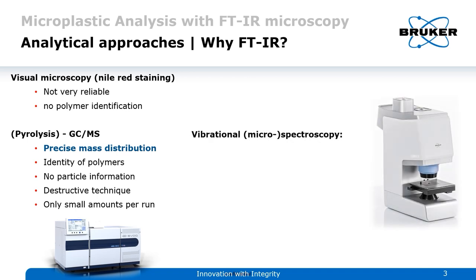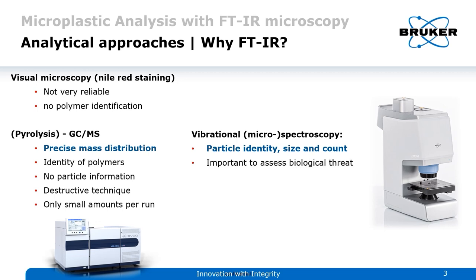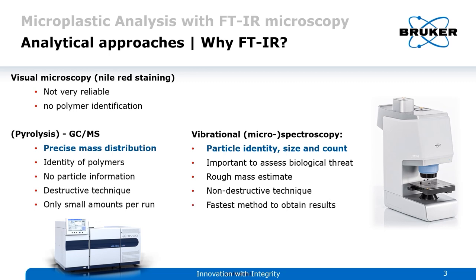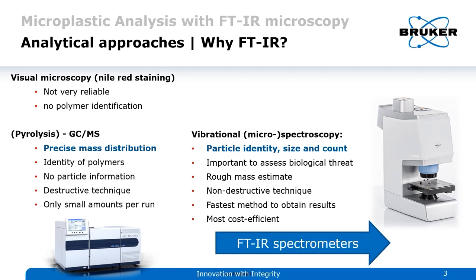You need to prepare your sample quite extensively for GC-MS. Then there's vibrational microspectroscopy. This gives you exact information about the particle identity, size and numbers — the most important information to assess any biological threat the particles may pose. It also gives a rough mass estimate. It's a non-destructive technique, so your sample is intact afterwards. It's also the fastest method available and most cost-efficient regarding material and labor time. This is why we're focusing on FTIR today.